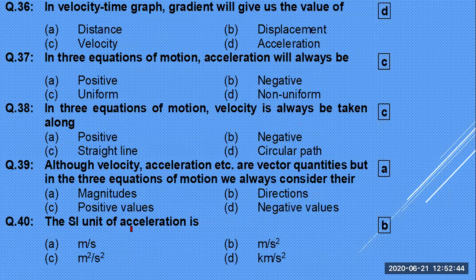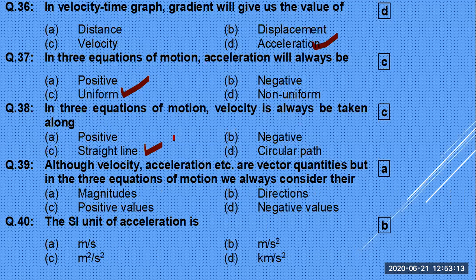The gradient of a velocity-time graph gives us acceleration. For the three equations of motion, uniform acceleration is the condition applied for their derivation. Although velocity and acceleration are vectors, in the three equations of motion we consider only their magnitudes.